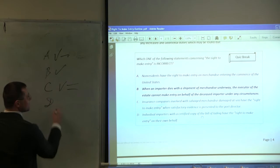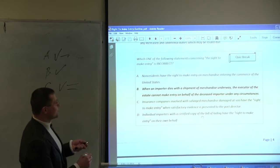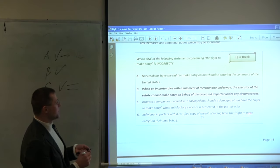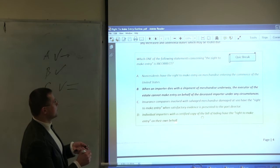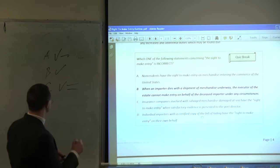So C has two minuses for the reasons as stated. D: Individual importers, notice with a certified copy of the bill of lading have the right to make entry on their own behalf. Well, why not? I think that's true. Right? Check.